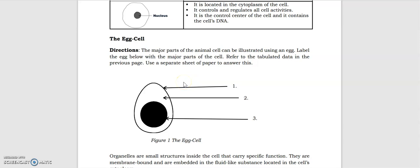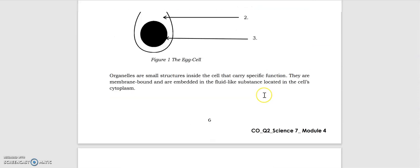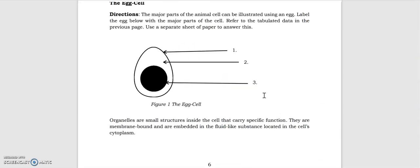All right, then we have the major parts of the cell. We can illustrate here very easily: this is the cell membrane, the cytoplasm, the nucleus. So let's go to the different organelles. These are the small structures inside the cell.